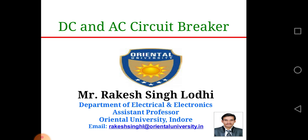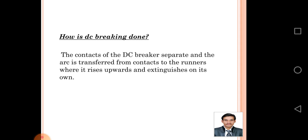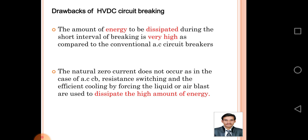How is DC braking done? The contacts of the DC breaker separate and the arc is transferred from contacts to the runners, where it rises upwards and extinguishes on its own. Drawbacks of HVDC circuit braking: the amount of energy to be dissipated during the short interval of braking is very high as compared to conventional AC circuit breakers.